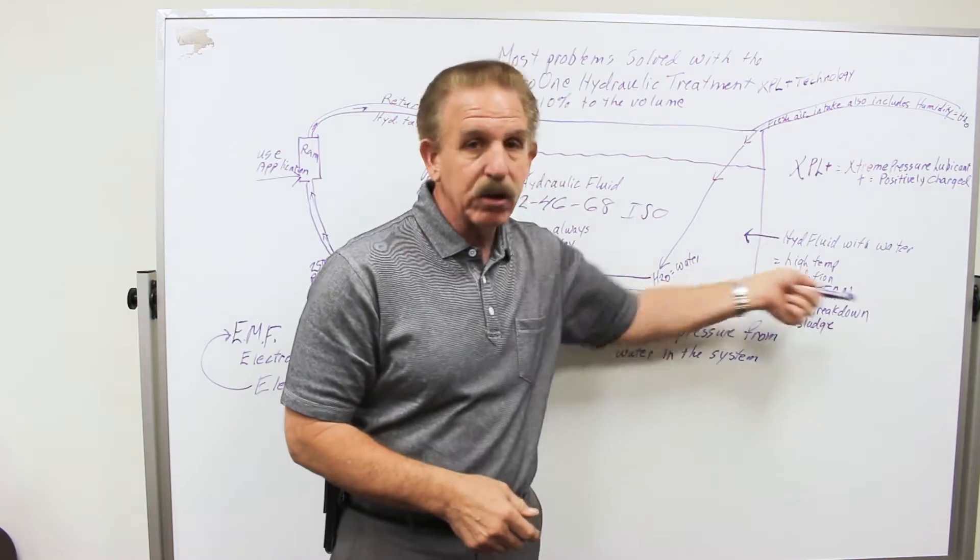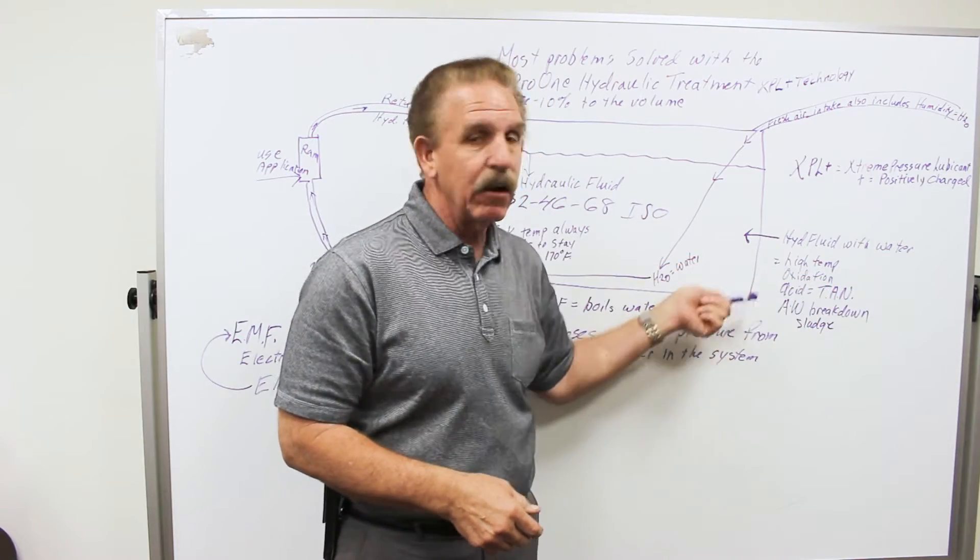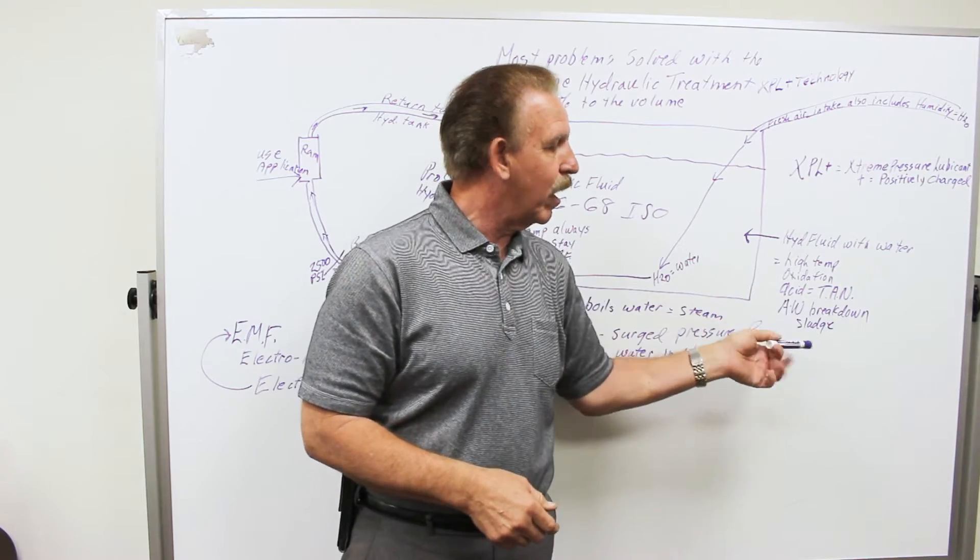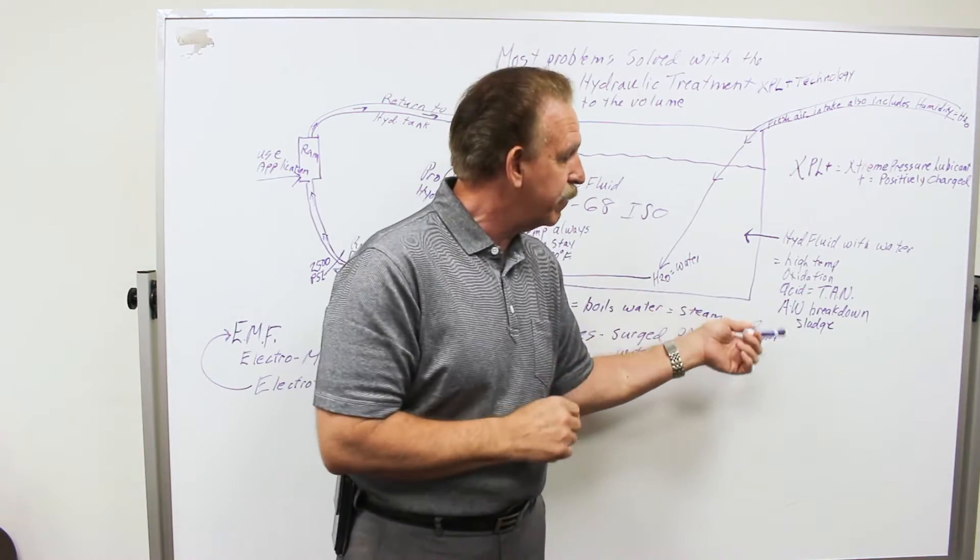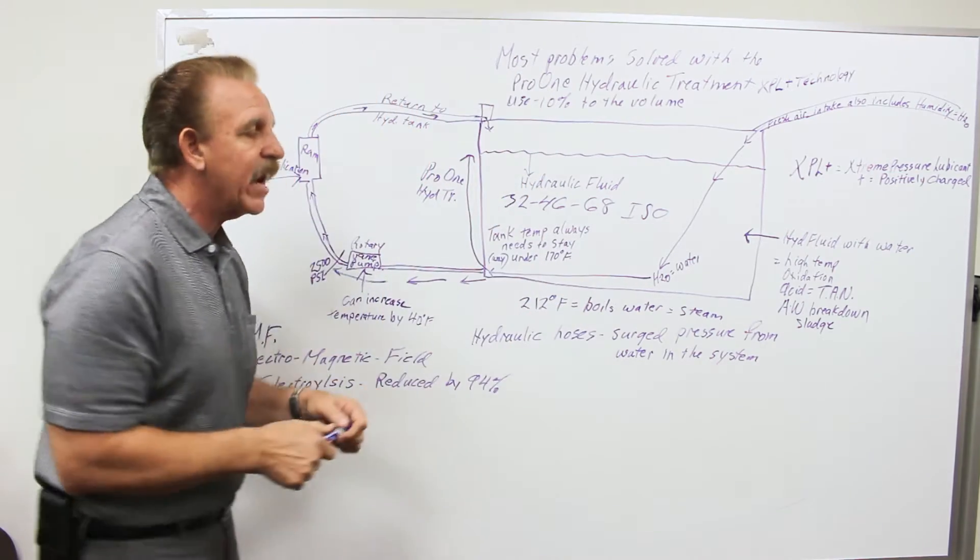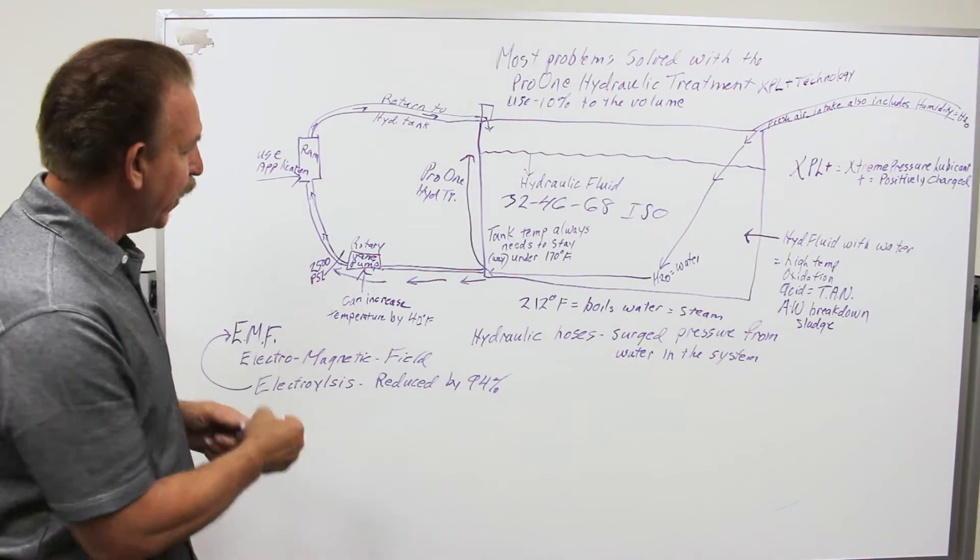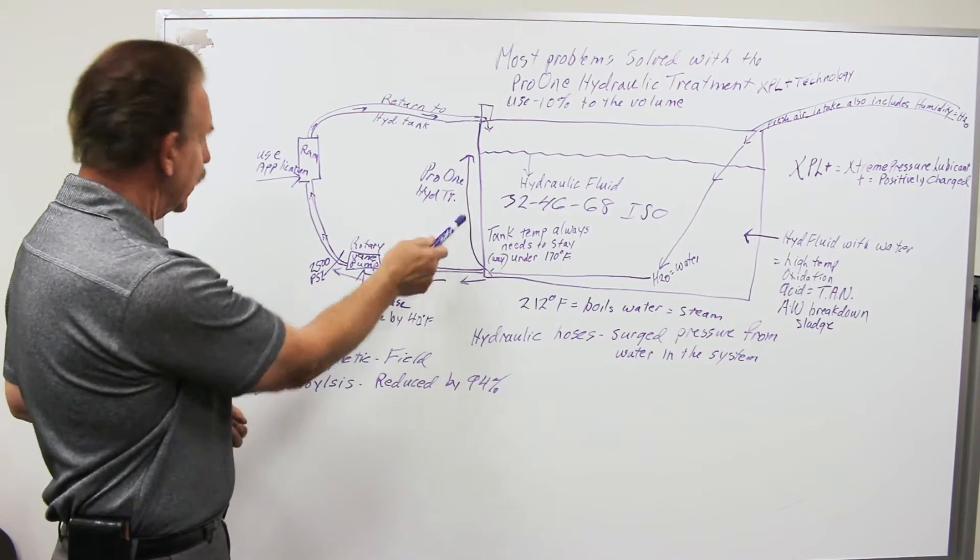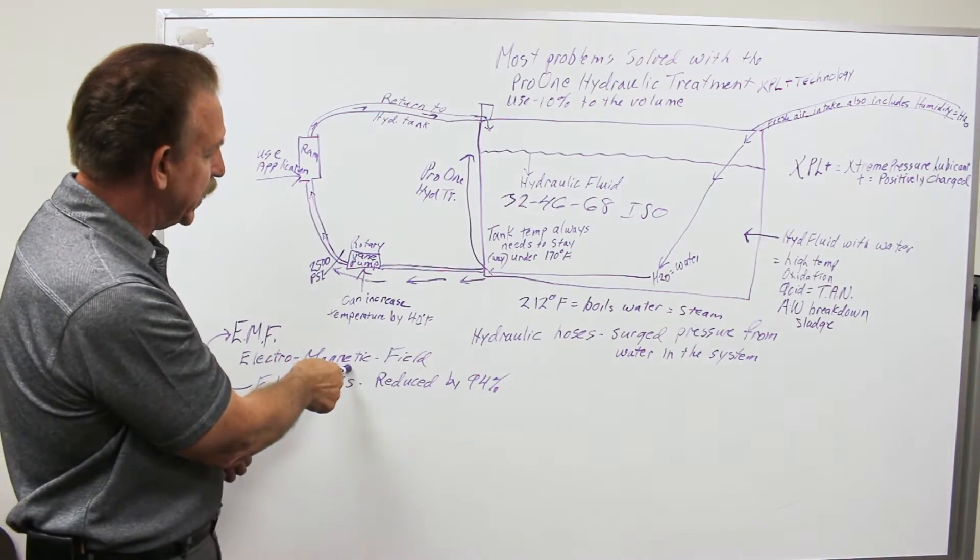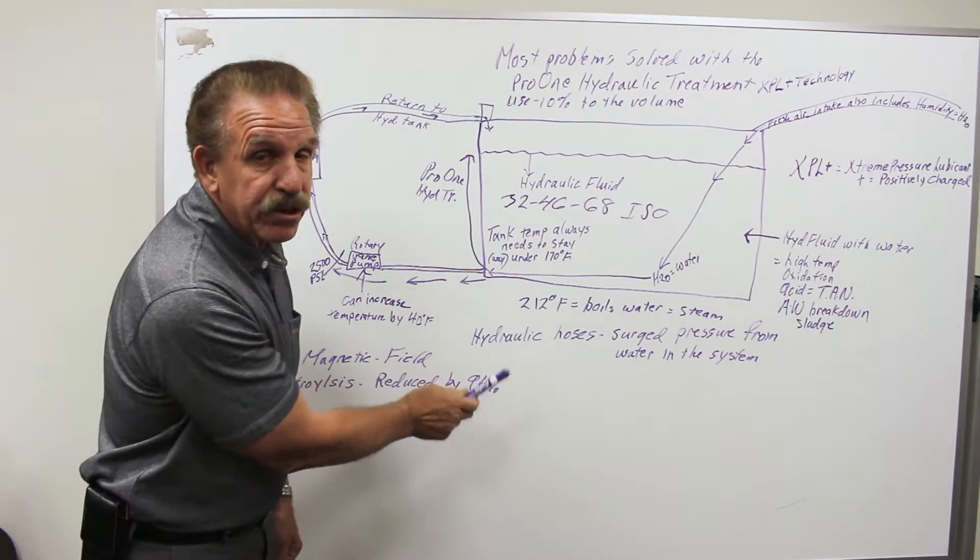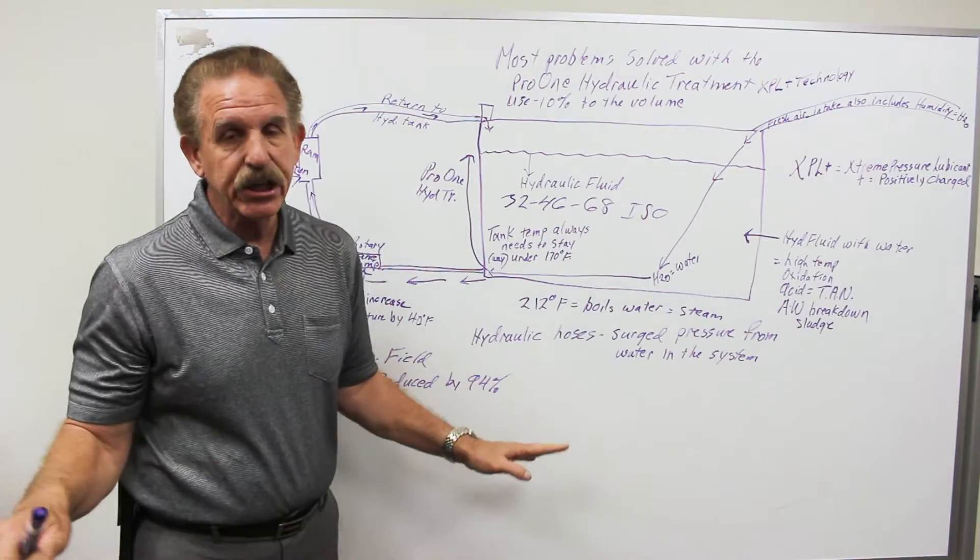You drop the temperature, slow down the oxidation, deal with the acid problem, help boost the anti-wear process so it's not breaking them down, and turning this stuff into sludge. These are all good factors, and what's helping that is the Pro-1 hydraulic treatment is going to reduce electrolysis, that electromagnetic field, by 94%. This is huge.